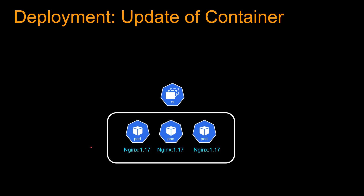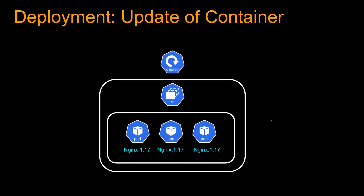However, what if you want to deploy those pods from Nginx version 1.16 to 1.17? Replica set cannot really help there. Replica set is just going to spin up a new pod if a pod goes down to keep it at the desired state. So that's where deployment comes into play.